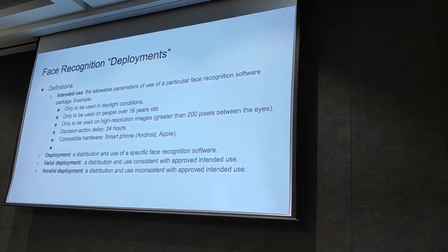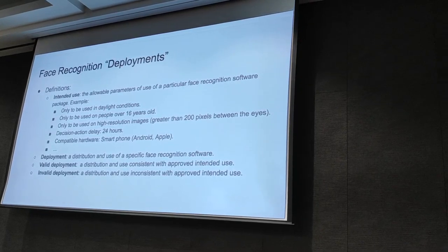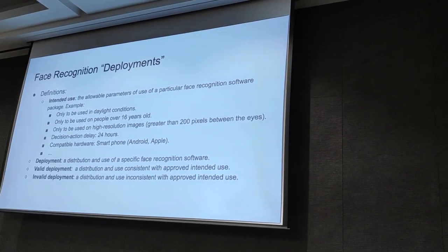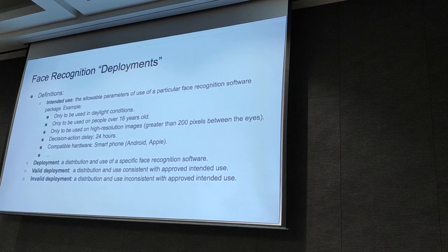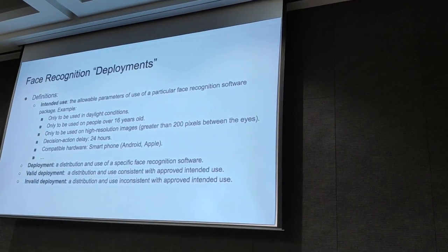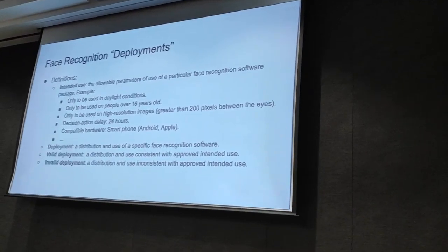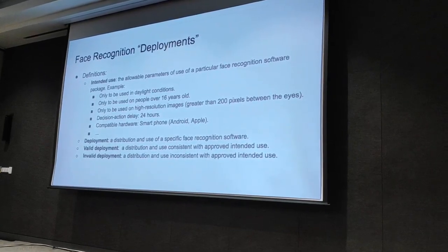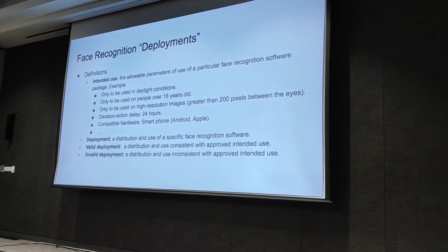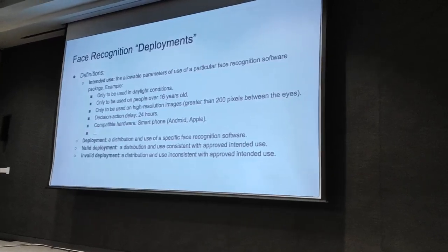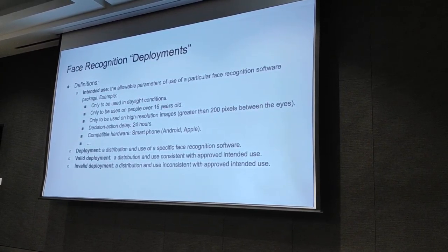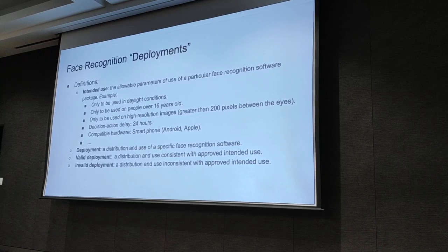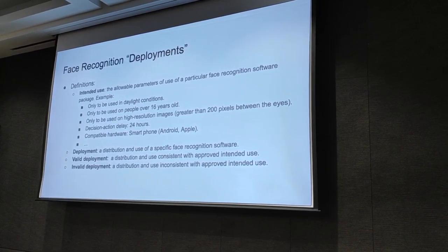Let's use the following definition: the intended use of a piece of software is the allowable parameters of use for a particular recognition software package. For example, only to be used in daylight conditions, only to be used on people over 16 years old, only to be used on high-resolution images with a certain interoperative distance. Another parameter I call decision-action delay of 24 hours — meaning if the software tells you this is John Smith, I have to wait 24 hours before I can take any action on that.